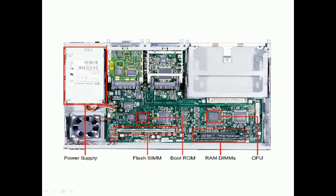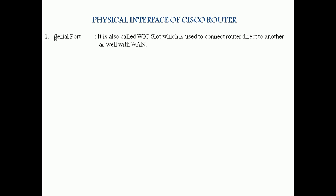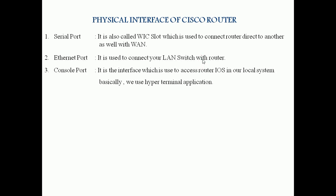Looking at the physical interfaces of the Cisco router, we can see a serial port — also called a WIC port or WIC slot — which is used to connect one router to another router. The second type of interface is the Ethernet port, the most common interface used to connect a LAN switch with your router. Another interface is the console port, which is used to configure the IOS; you can access the router IOS from the console port using HyperTerminal.